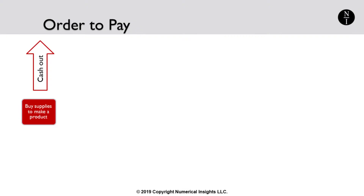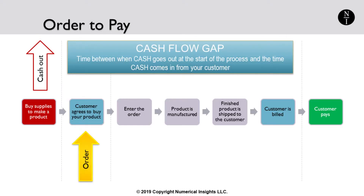To understand your business, you need to understand the concept of order to pay — some people call this order to cash. If you're a manufacturer, initially you use cash to buy parts or raw materials. A customer places an order, the product is manufactured and shipped out. You invoice your customer, and generally in 30, 60, or 90 days, depending on the payment terms, you get paid.